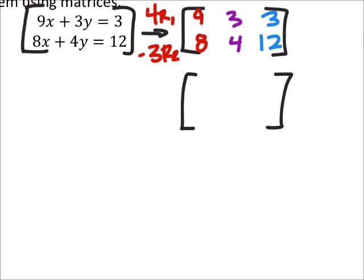So for 4 times row 1, I'm just going to multiply all those numbers by 4. So 4 times 9 is 36, 4 times 3 is 12, and 4 times 3 is 12. On that second row, I've got negative 3 times 8, which is negative 24, negative 3 times 4, which is negative 12, and negative 3 times 12, which is negative 36.